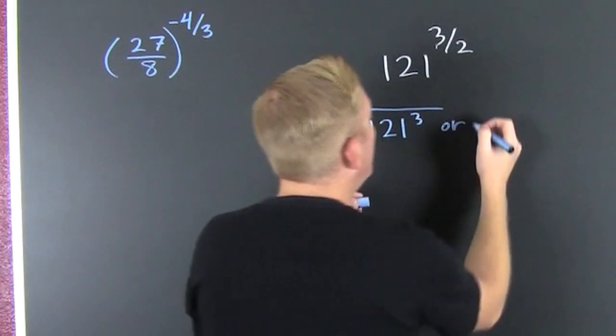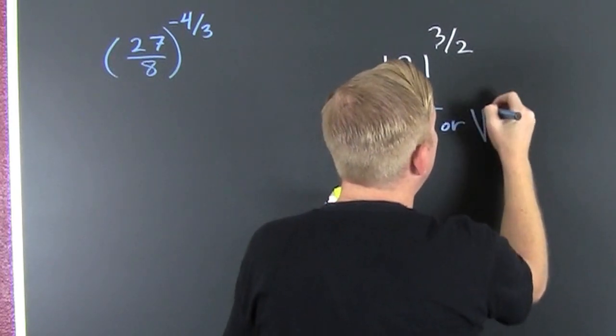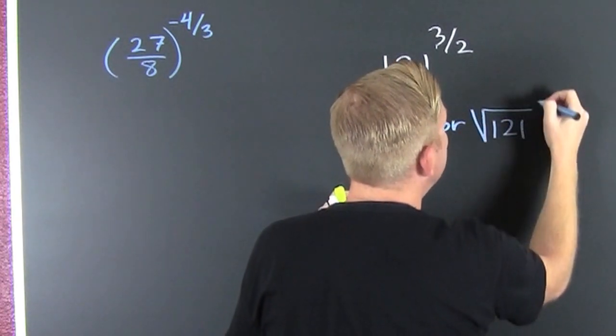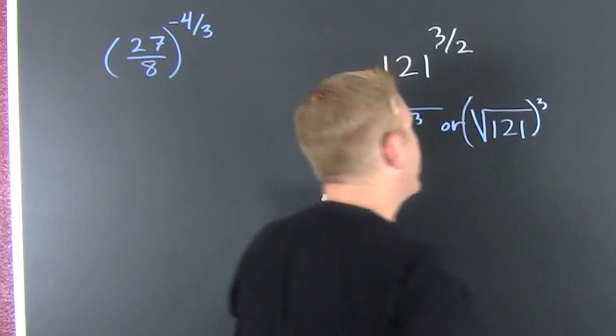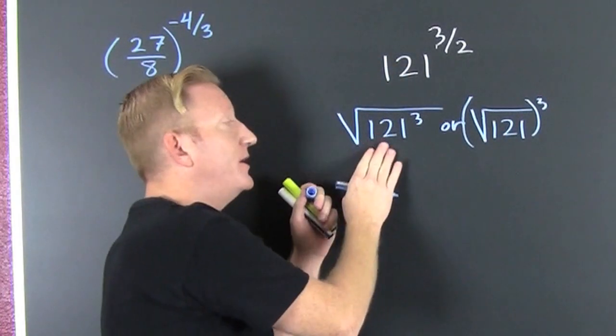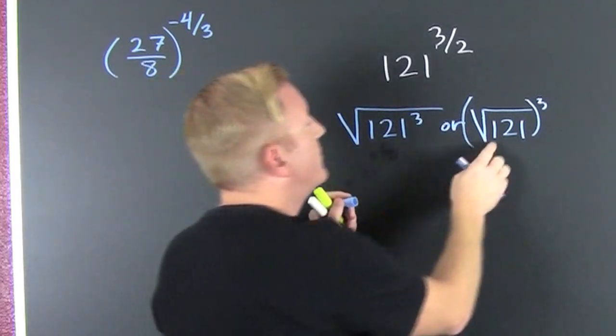A more preferred, I have the square root of 121 to the 3rd. Yeah, I have one of those two forms. This one leads to big numbers. It'll still work out. But here...